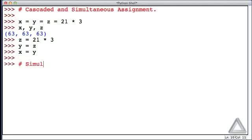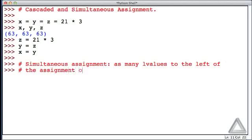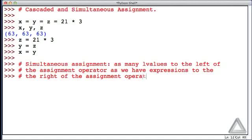Now let's talk about simultaneous assignment, and this one will look a little bit strange. We only use a single assignment operator, but we could have multiple L values. So we need to have as many L values to the left of the assignment operator as we have expressions to the right of the assignment operator.